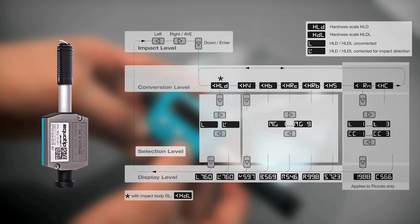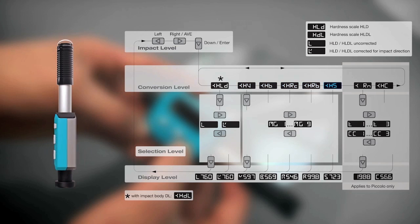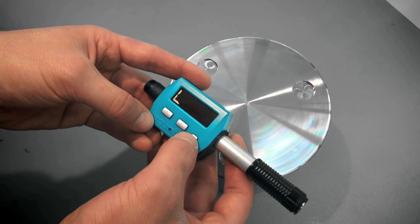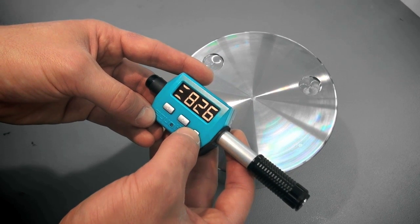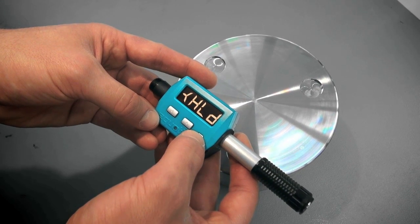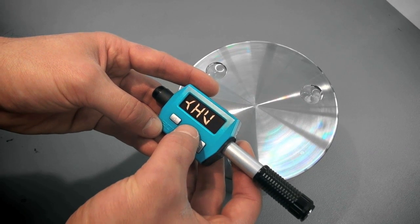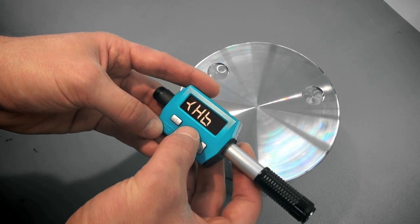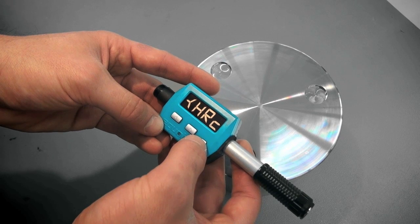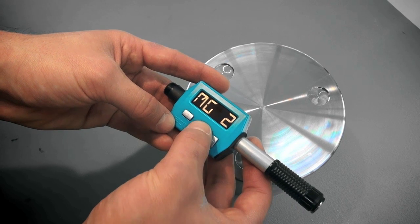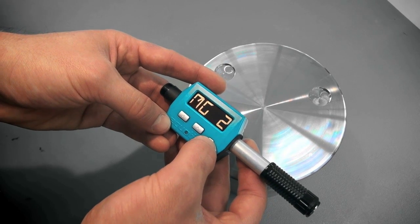If you need results in other hardness scales, such as Vickers, Brinell, Rockwell or Shore, the Ecotip Piccolo can perform the required conversions. Enter the conversion scale menu level by pressing the down key. If you press the right key, the instrument displays the different hardness scales. Select the required hardness scale by pressing the down key again. Select the appropriate material group by pressing the right or left key and confirm with the down key.